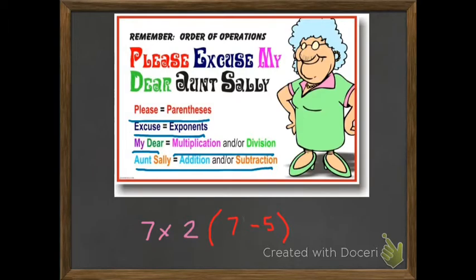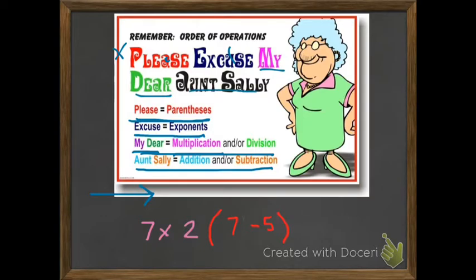So if you see a number sentence like this, you would do what's in the parentheses first. Then you would do your multiplication or division from left to right. And then once you're done with that, you would do your addition and subtraction. So remember: please excuse my dear Aunt Sally. 'Please' is parentheses, 'excuse' is exponents, 'my dear' together is multiplication and division, and 'Aunt Sally' is addition and subtraction.